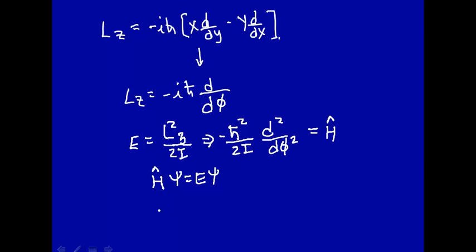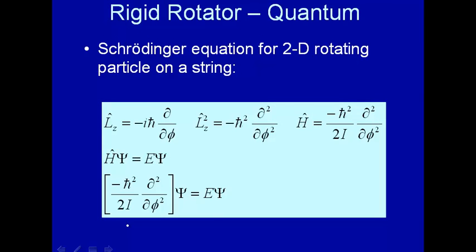Let's put in that for the Hamiltonian operator. So our Schrödinger equation is minus ℏ squared over 2I, the second derivative with respect to that polar coordinate, that operator operating on the wave function ψ equals E ψ. So there it is, that's how we transformed from classical to quantum mechanics, and we have now the Schrödinger equation.